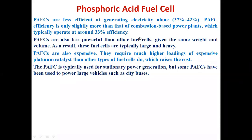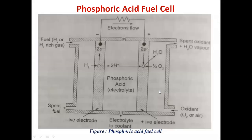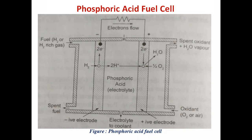PAFCs require much higher loadings of expensive platinum catalyst than other types of fuel cells. PAFCs are typically used for stationary power generation, but some have also been used for vehicles such as automobiles. Comparing alkaline fuel cell and PAFC, the operation of these two kinds of fuel cells is similar; the difference lies in the electrolyte and construction, which causes different reactions and different amounts of electricity to flow.